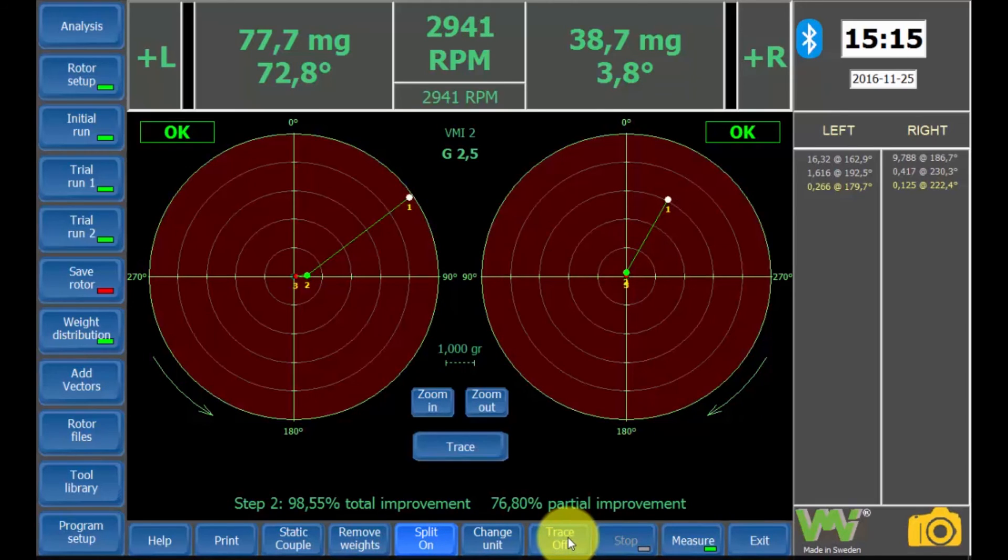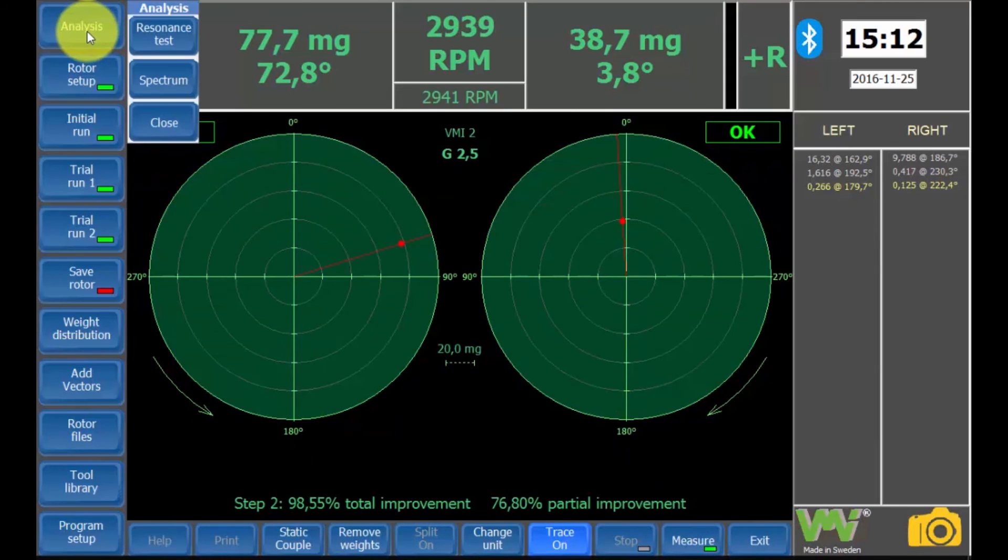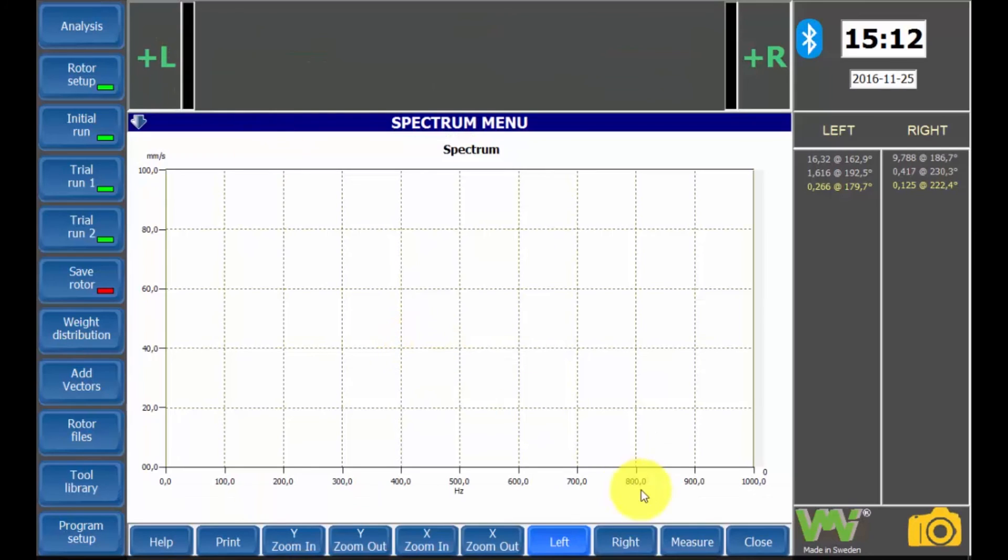The trace on button will show the path from unbalance to balance. If you need to take a closer look, use the zoom in and zoom out buttons. In the spectrum menu, we can measure unbalance like we did before the balancing process started to compare the obtained results. The newest measuring will be shown in the balancing report.